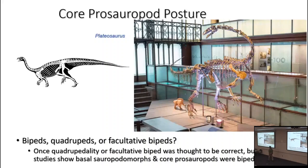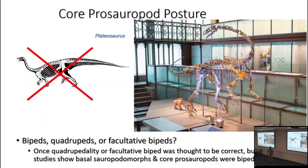For a long time people argued for either quadrupedality or facultative bipedalism — walking on hind legs or all fours. But newer studies, probably 15 years old now, looking at the details of the wrist and forearm, showed they couldn't turn their hands into a weight-bearing position. So if they couldn't put their hands in a position to walk on, they were neither facultative bipeds nor quadrupeds — they had to have been obligate bipeds, walking only on the hind legs.